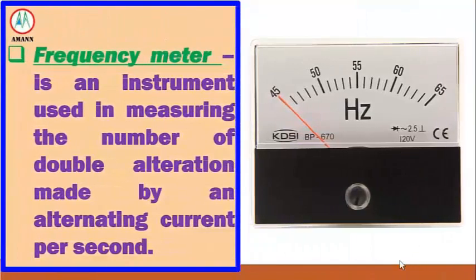Frequency meter is an instrument used in measuring the number of double alternations made by an alternating current per second.